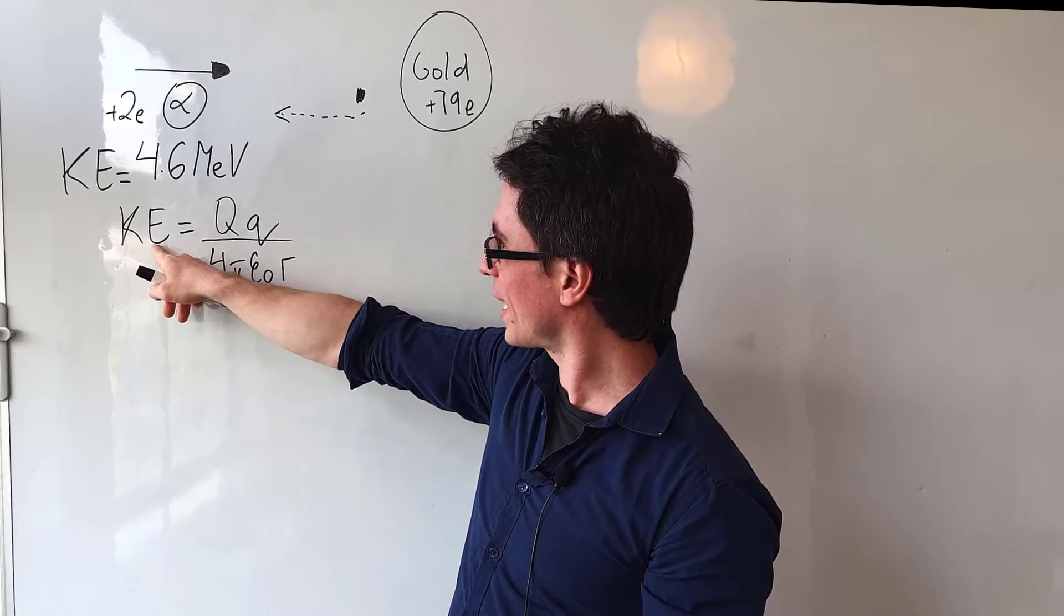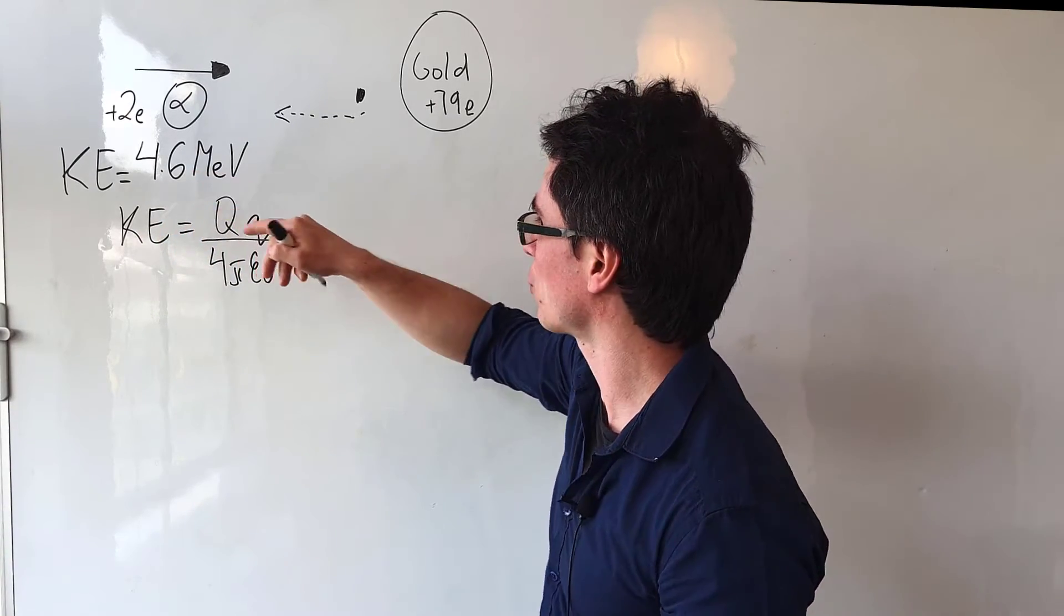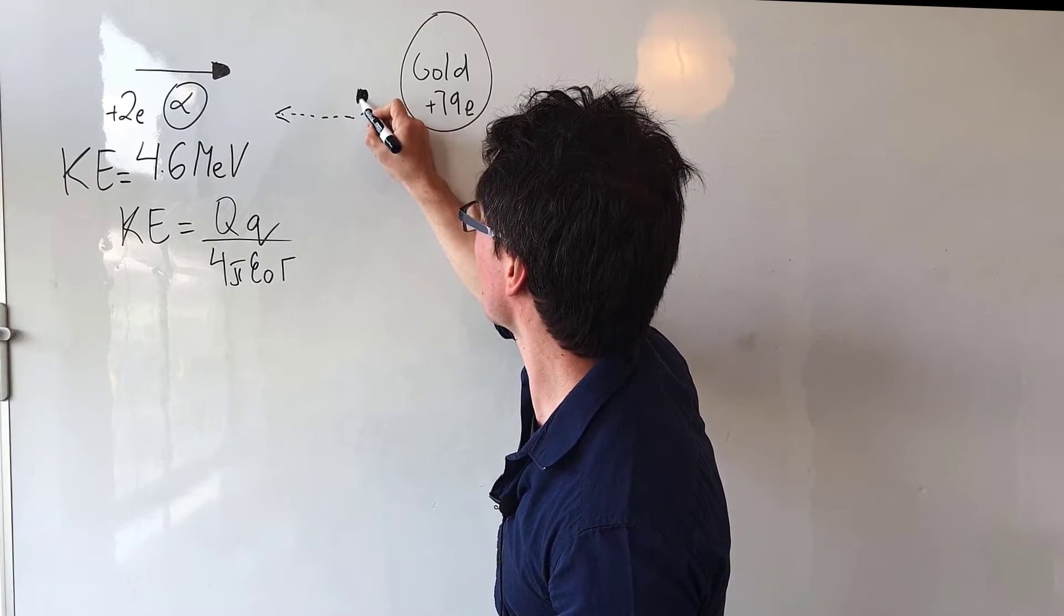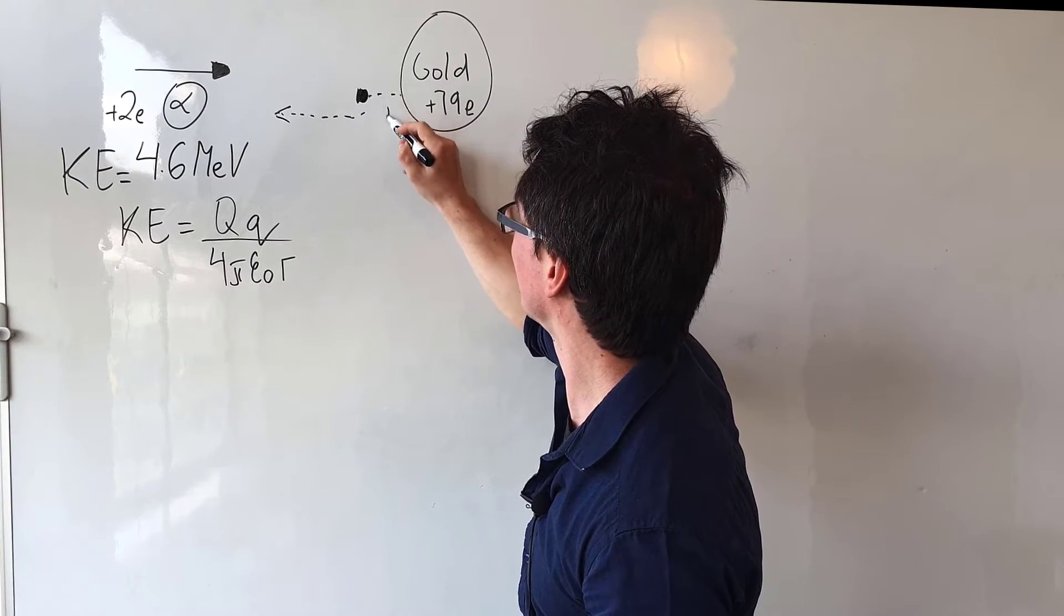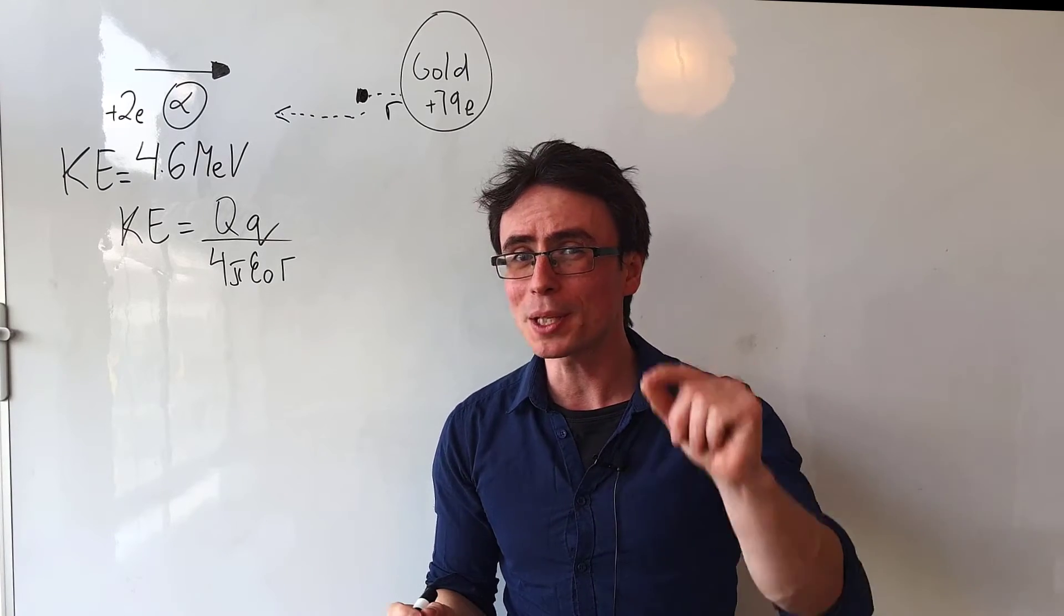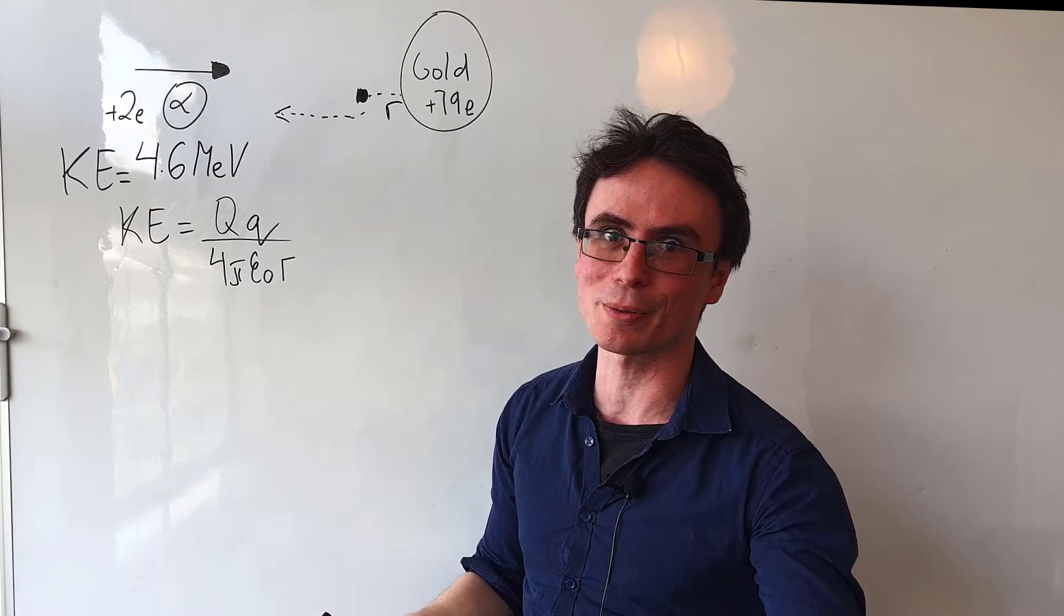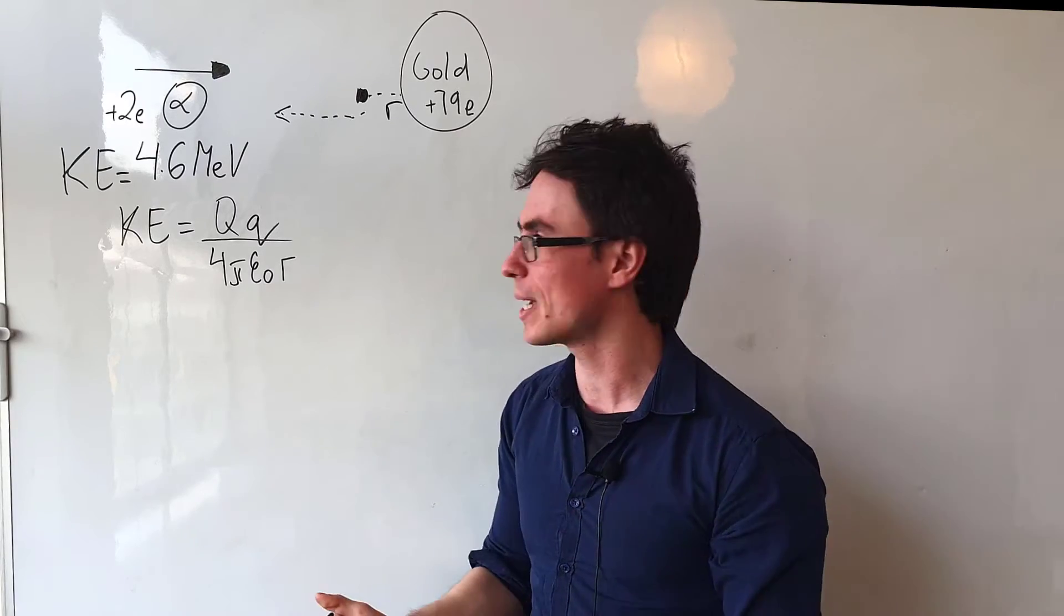When all of that kinetic energy 4.6 mega electron volts has turned into potential energy, which is right here, let's say, the distance will be r. It may not be quite the nucleus, but it will give us an idea of how large or how small the nucleus actually is.